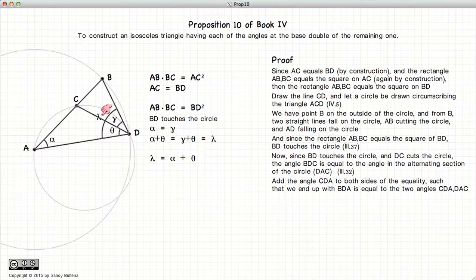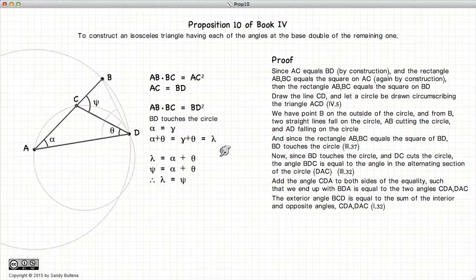Now let's look at the angle lambda. Lambda is equal to gamma plus theta. Well, let's start with this equation, our original one. We had alpha is equal to gamma. So if we add theta to both sides of the equation, we have alpha plus theta equals, of course, gamma plus theta because we're adding equals to equals. And that is equal to this angle that I've called lambda. So in other words, lambda is equal to alpha plus theta.